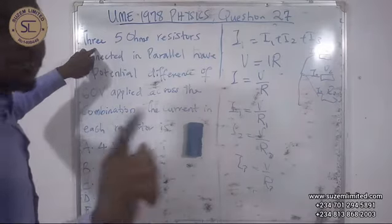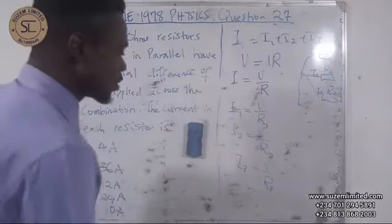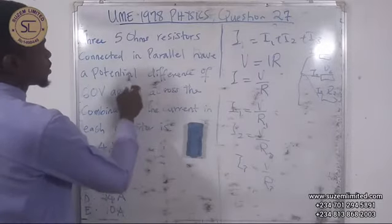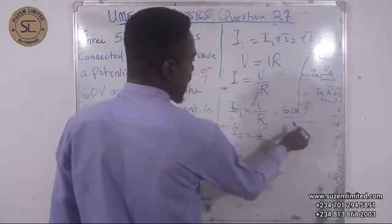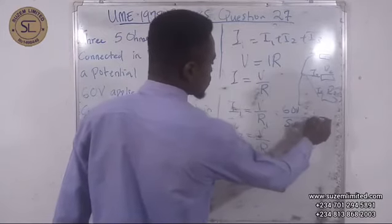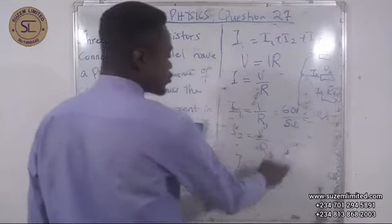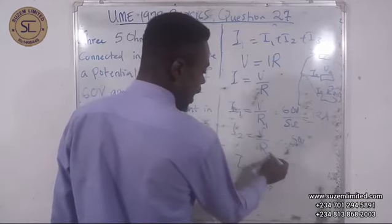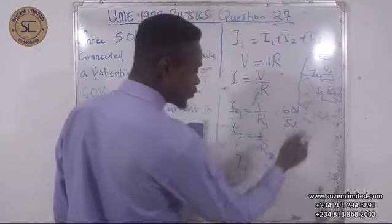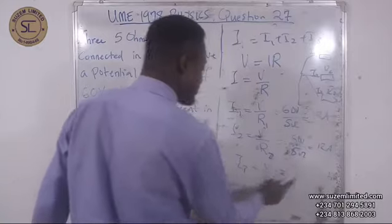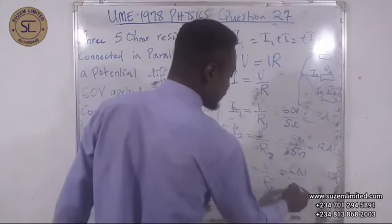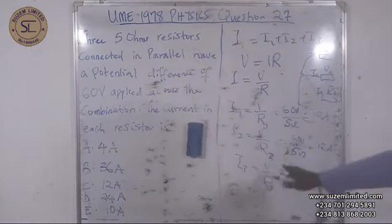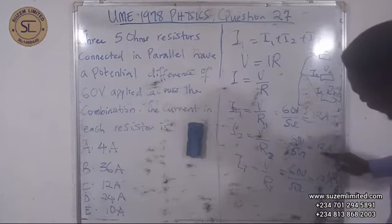We have three resistors and each has a resistance of 5 ohms. So I1 equals V over R, which is 60 volts over 5 ohms, giving us 12 amperes. Similarly, I2 equals 60 volts over 5 ohms, which is also 12 amperes. So the current in each of the resistors is 12 amperes.